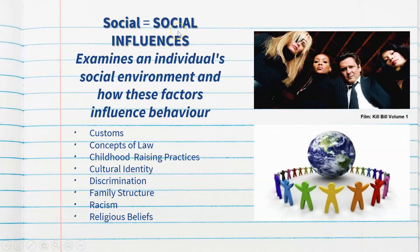We must also take into consideration the social influences. This examines an individual's social environment and how these factors influence behaviour. It could be a person's customs and the social customs they have been taught to abide by. Concepts of the law also matter — different countries have different laws, some more relaxed and some more severe — so the law itself as a social factor may influence criminal behaviour, either positively or negatively.